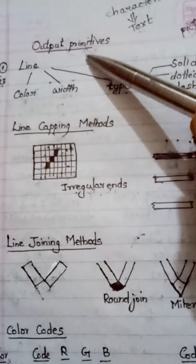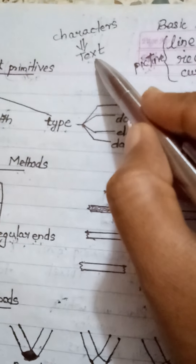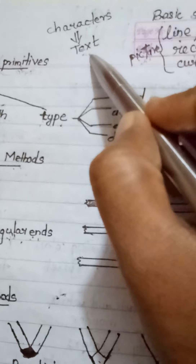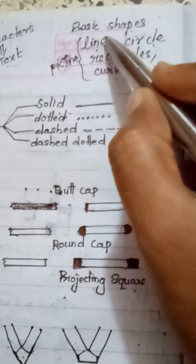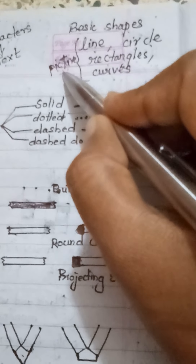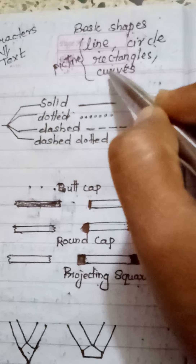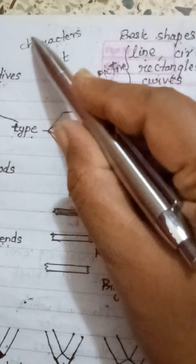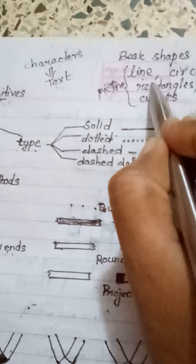Primitive means basic. For example, if I want to display a text, the elements used in the text are characters — many characters combined together form a text. So character is the basic element used to create text. Similarly, if I want to draw pictures, the basic elements used are line, circle, rectangles, and curves. These basic elements are called primitives.